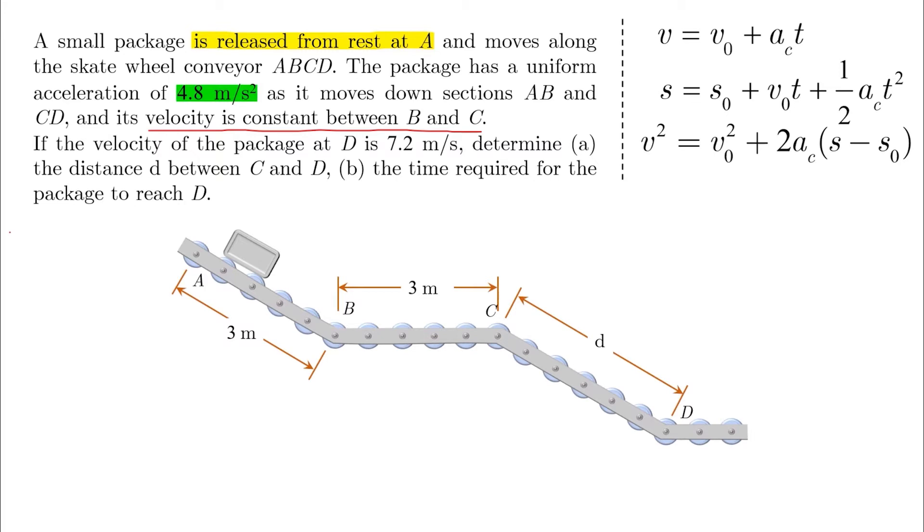Released from rest at A means VA equals zero, and VD is also given. Since the velocity at D is given and the acceleration along CD is also given, we only need the velocity at point C, which is V0 in this equation. So we can find D or delta S here.